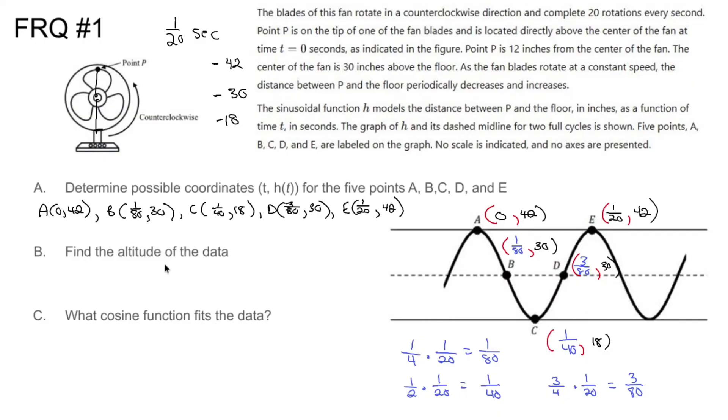Problem B, find the altitude of the data. This is much friendlier. The altitude is literally half the distance of the total height. And you calculate that by doing maximum minus the minimum, all divided by 2. So the maximum height was 42, minus the minimum height, which is 18, all divided by 2. 42 minus 18 is 24. And 24 over 2 is 12. Which makes sense, because we were told that the distance between the center and the tip of the blade is 12 inches.